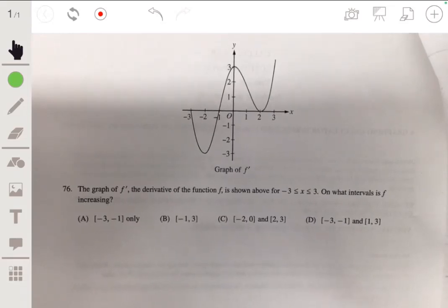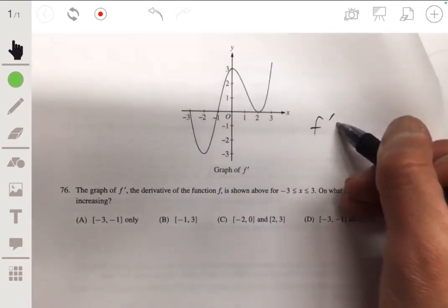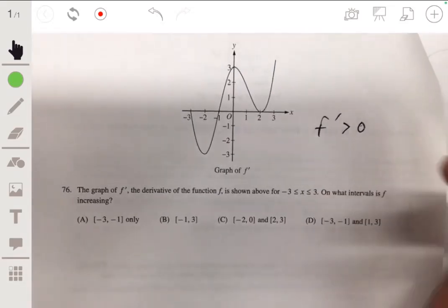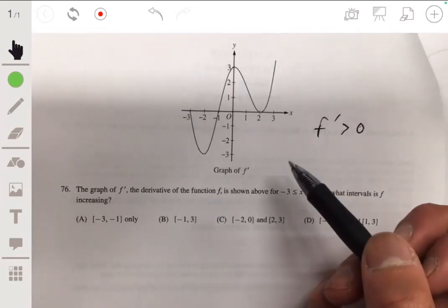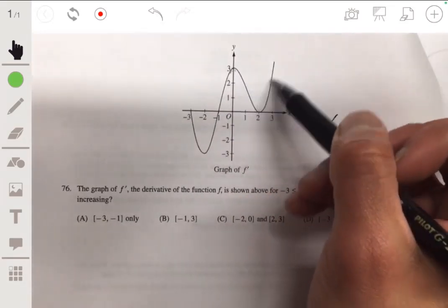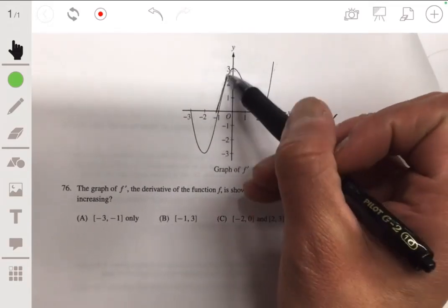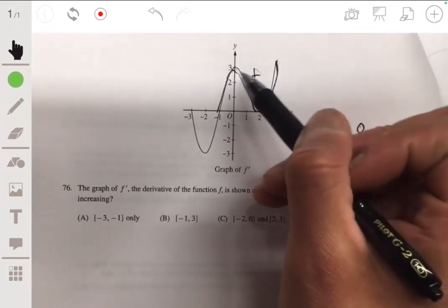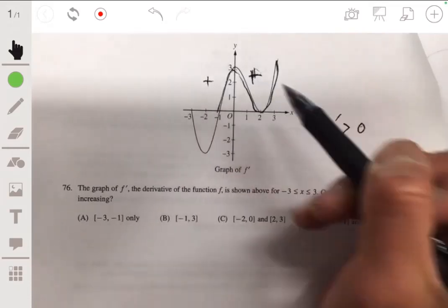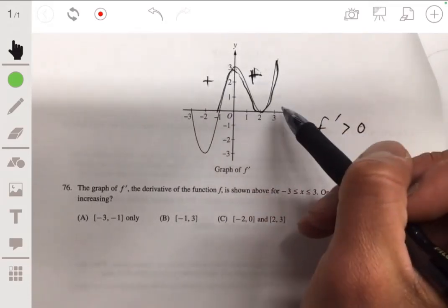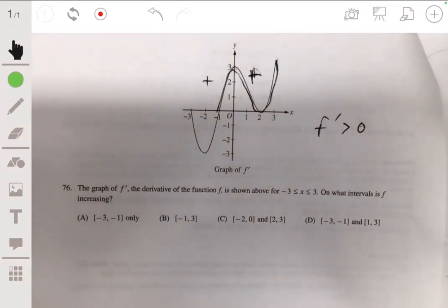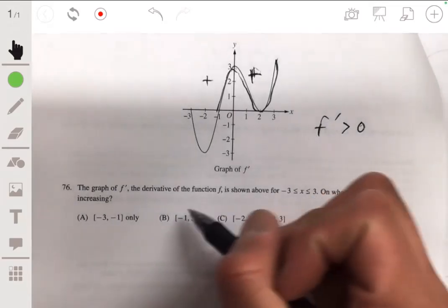When f prime is positive, when f prime is greater than zero, that means that f is increasing. It doesn't matter if it goes up and down above the x-axis. All along this region it's positive, so we can say from negative one up to three it's going to be increasing. So the answer will be B.